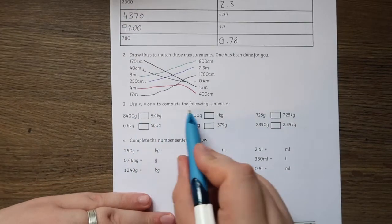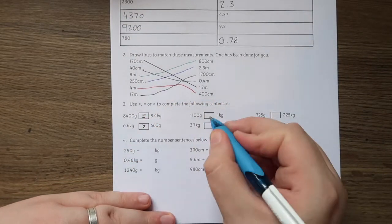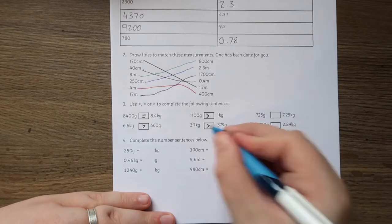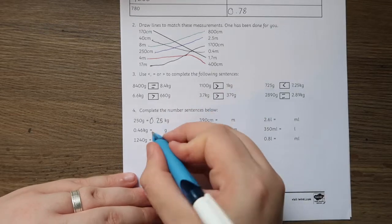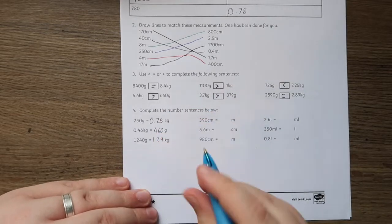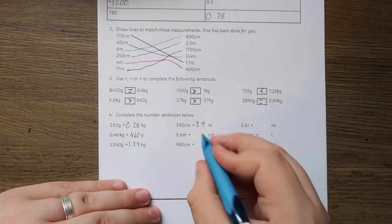Converting measurements is an important skill as pupils progress through their maths education and these worksheets can help teach children how to quickly convert measurements from one unit to another as well as understanding the relationship between these units.